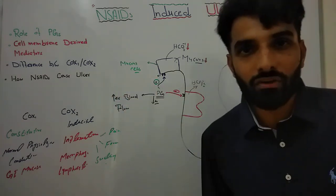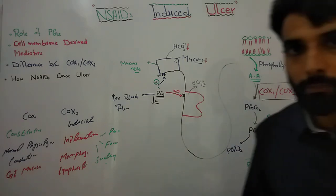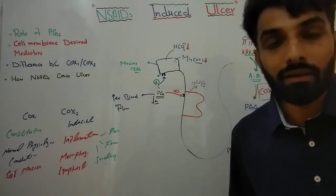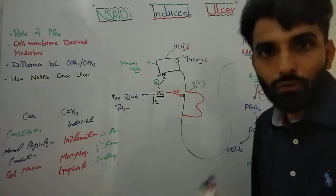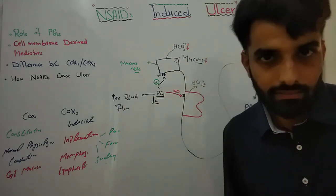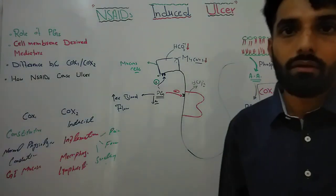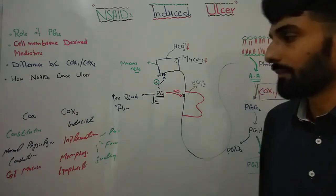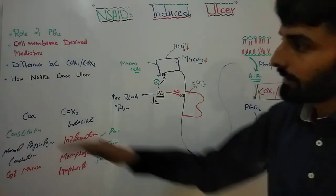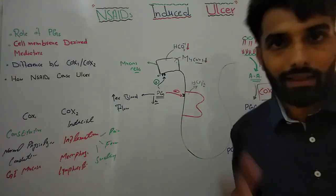Additionally, prostaglandins normally cause increased blood flow for the regeneration mechanism. When there are no prostaglandins because COX-1 has been blocked, prostaglandin-induced blood flow will also reduce, and the process of regeneration and healing will decrease. All these things may ultimately lead toward gastric ulcer, simply by blocking the COX-1 enzyme — which we didn't intend to block. This is due to the non-selective nature of most NSAIDs.